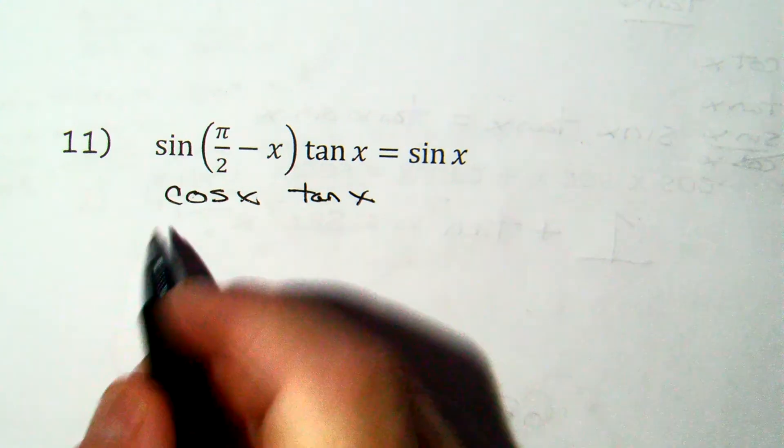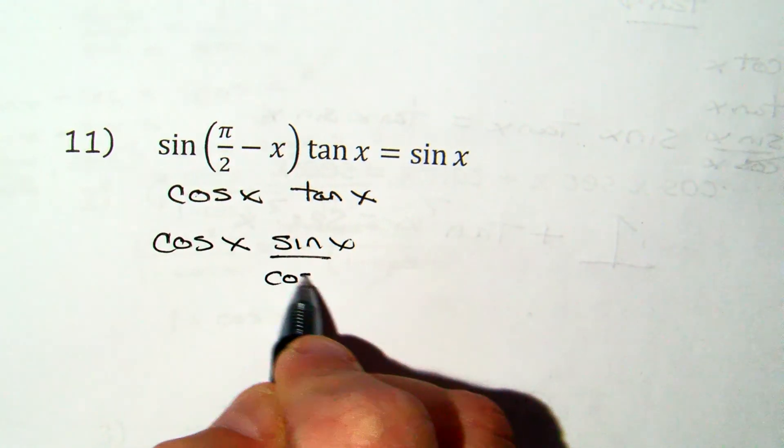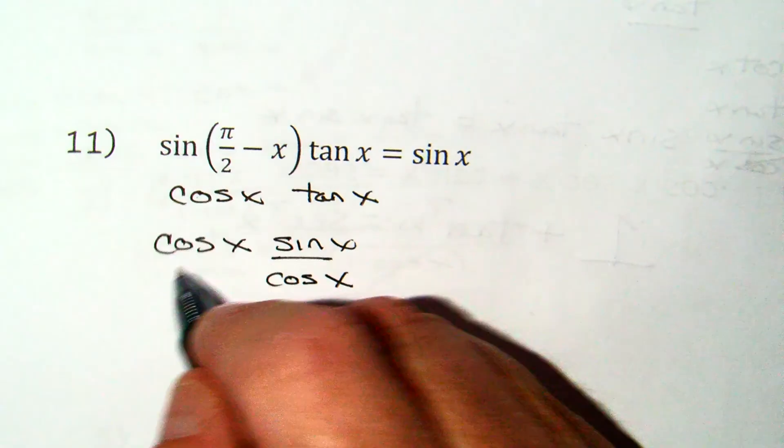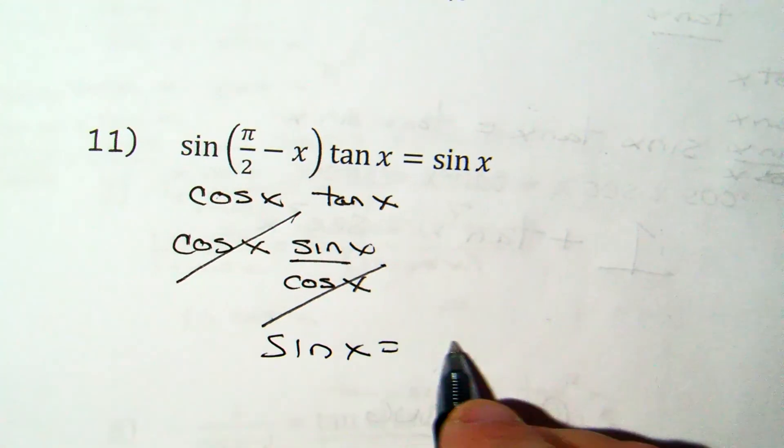I rewrite the tangent x as sin x over cos x. What do the cosine x do to each other? Cancel. And you have sin x on the left and you got sin x on the right.